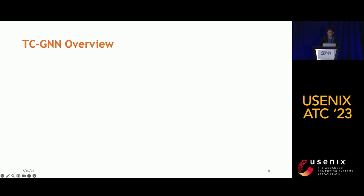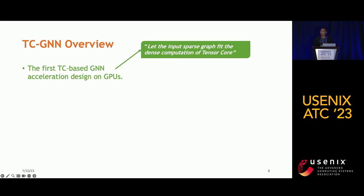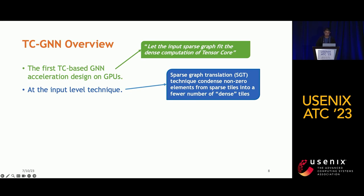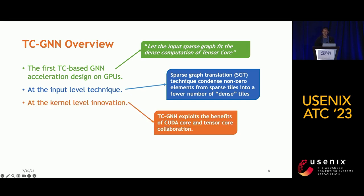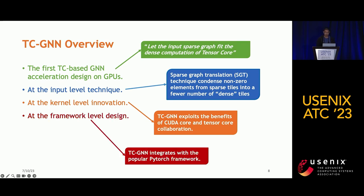We introduce our solution, TCGN, the first tensor core-based GNN acceleration design on GPUs. Our key idea is to let the input sparse graph fit the dense computation of the tensor core through comprehensive algorithmic and system designs. At the input level, we develop a sparse graph translation technique to identify non-zero tiles and condense non-zero elements into dense tiles. At the kernel level, we leverage collaboration of CUDA core for data loading and tensor core for faster computation. At the framework level, we integrate TCGN with PyTorch to reduce learning effort and improve user productivity.